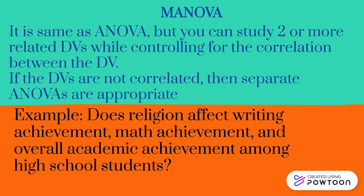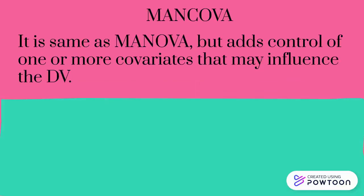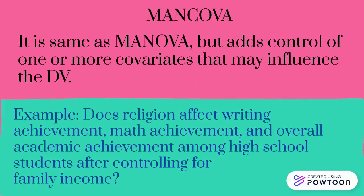Next is MANOVA. MANOVA is the same as ANOVA but you can study two or more related dependent variables while controlling for the correlation between them. If the dependent variables are not correlated, then separate ANOVAs are appropriate. For example: does religion affect writing achievement, math achievement, and overall academic achievement among high school students? The last test is MANCOVA, which is the same as MANOVA but adds control of one or more covariates. For example: does religion affect writing, math, and overall academic achievement among high school students, after controlling for family income?